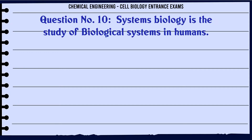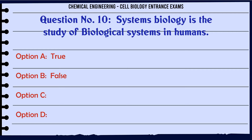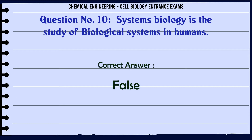Systems biology is the study of biological systems in humans. A. True. B. False. The correct answer is False.